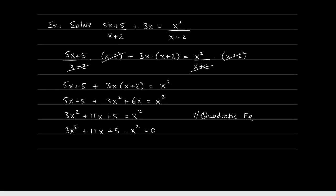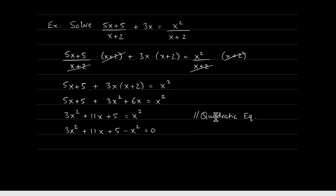Distributing 3x into x plus 2 yields 3x squared plus 6x equals x squared. Combining like terms: 3x squared first, 5x plus 6x is 11x, the 5 stays, and the x squared stays. At this stage it should be clear this is a quadratic equation, so we get all terms to one side.